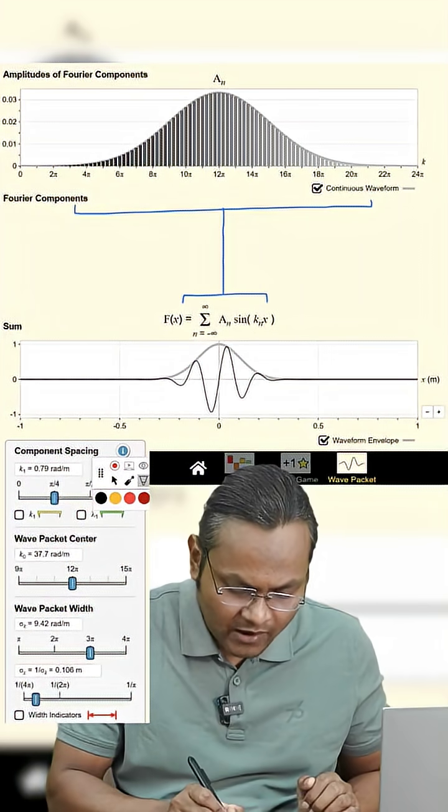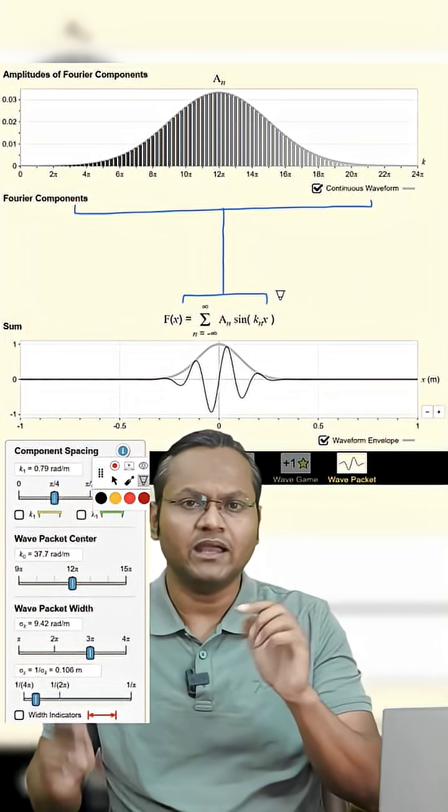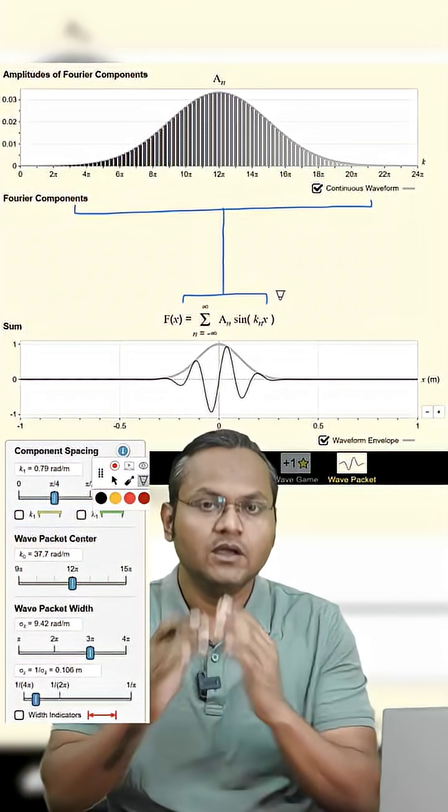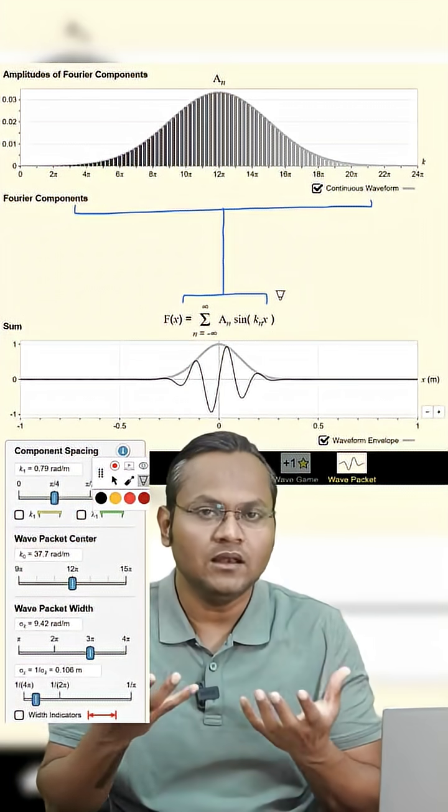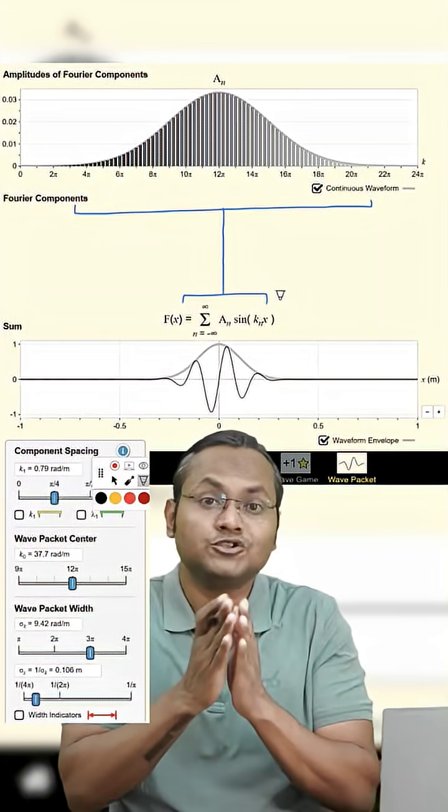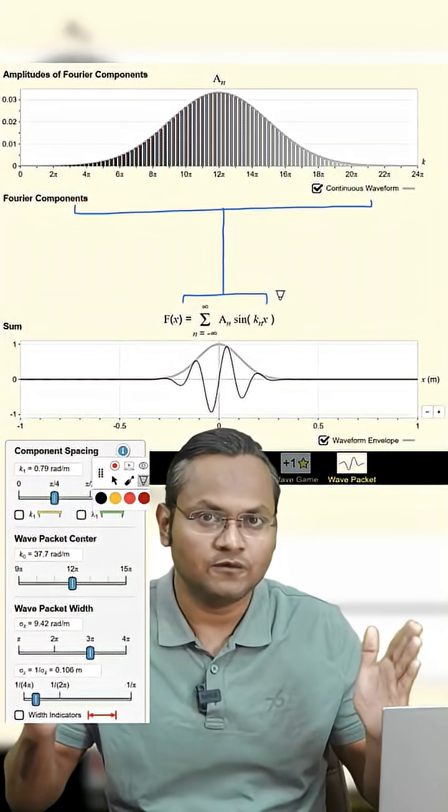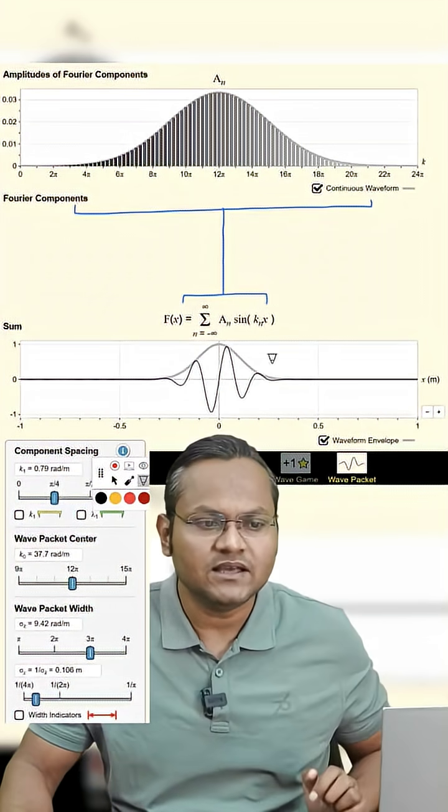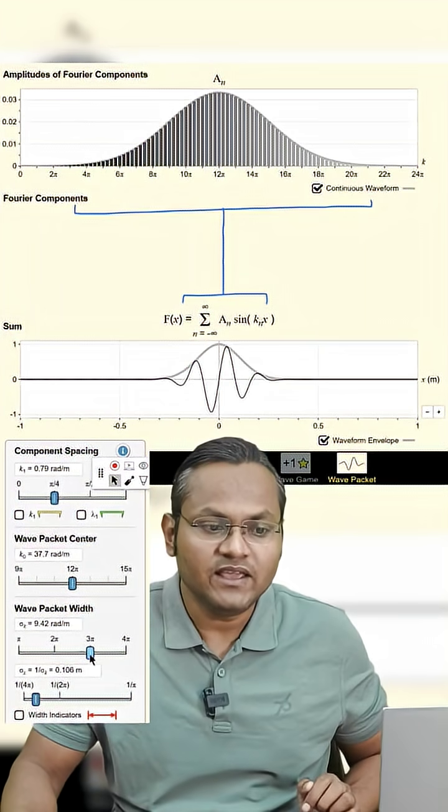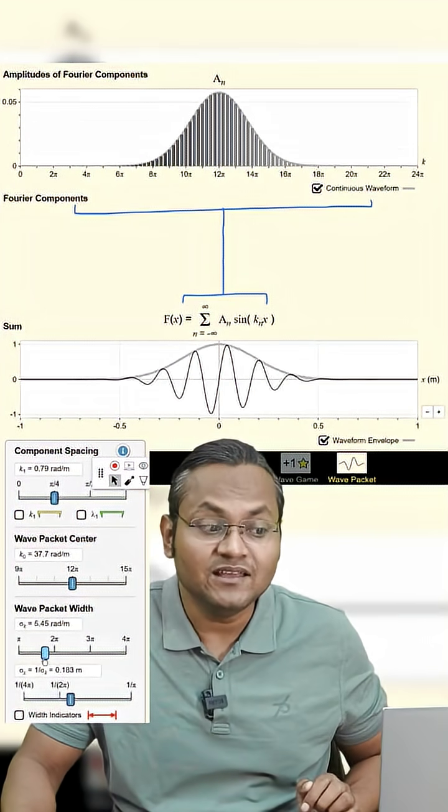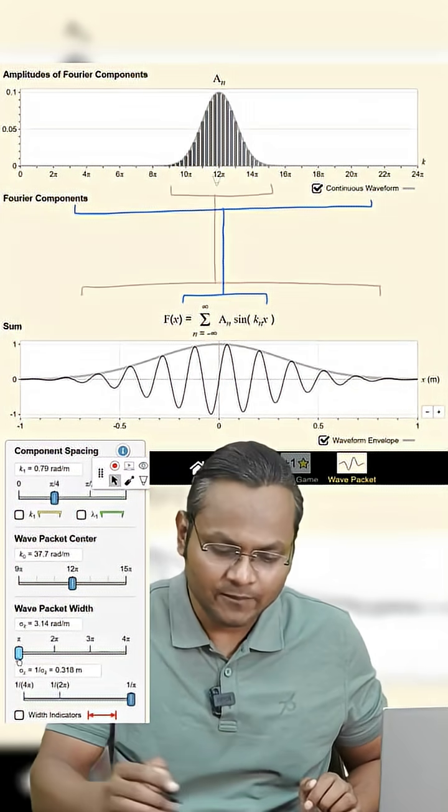Because if I want to create a singular wave packet of very small width, I will require not only a large number of sine waves but also a greater range of sine waves. If I decrease the range, then the region in which they constructively interfere is going to increase. You see this? What is happening?